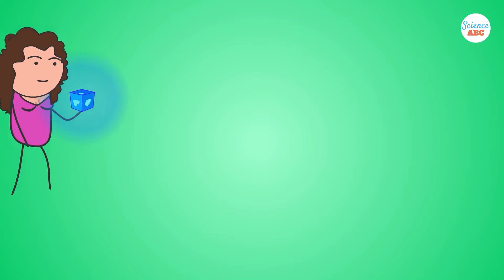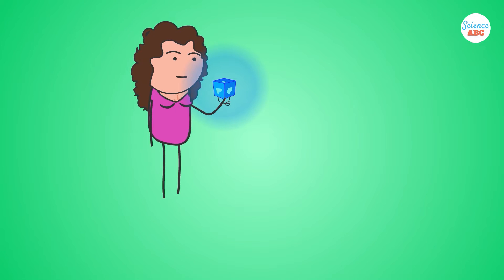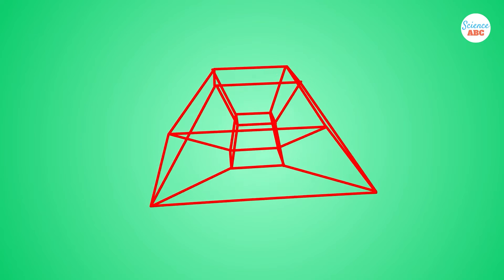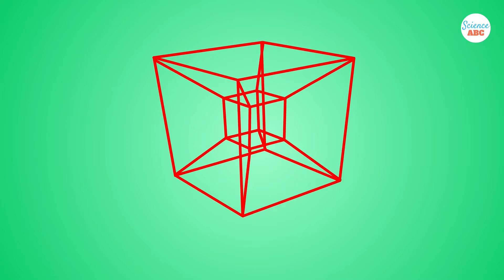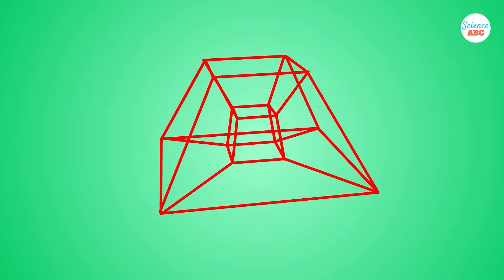A Tesseract is an object that exists in four dimensions. However, before we explain a Tesseract in detail, let's start from the beginning.